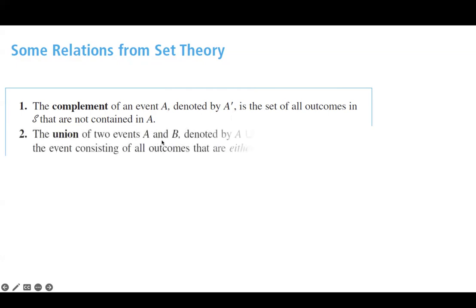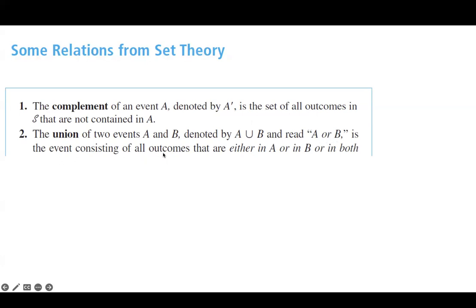The union of two events, like A and B, which is denoted by A union B — you read it as 'A or B' — is the set of all outcomes that are either in the first event, or in the second event, or both of them.